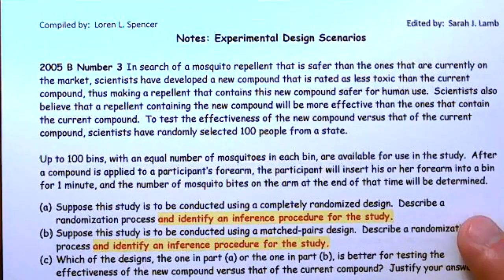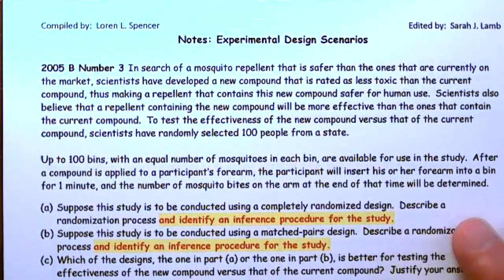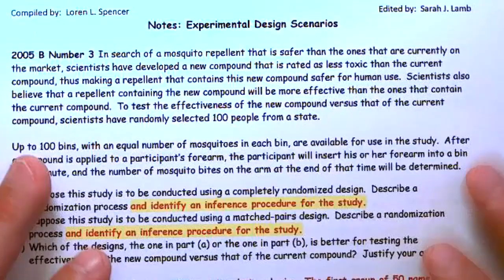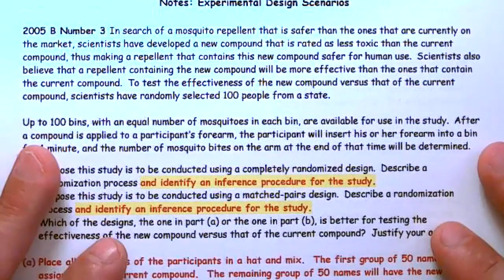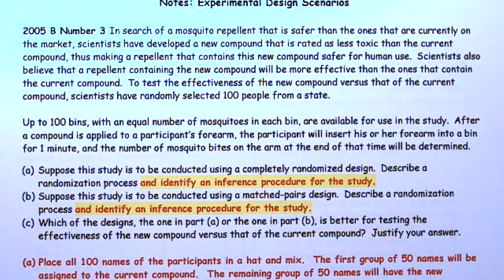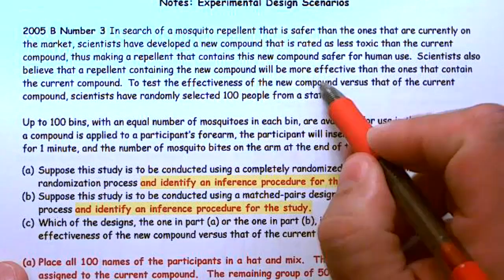We're going to go through an entire process and conduct a matched pair design. In a search for mosquito repellent that is safer than the ones currently on the market, scientists have developed a new compound rated as less toxic than the current one, making a repellent safer for human use. Scientists also believe the new compound will be more effective than the current compound.